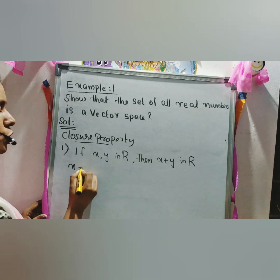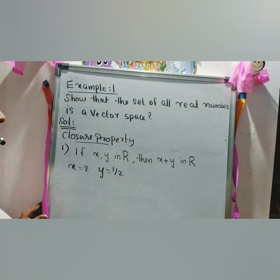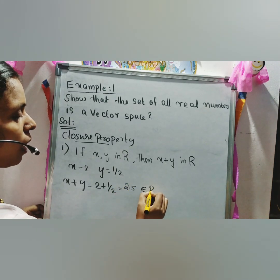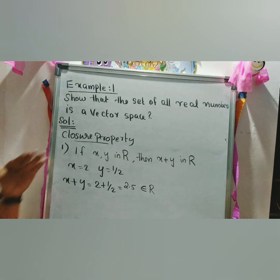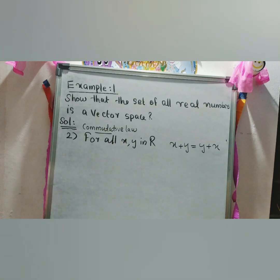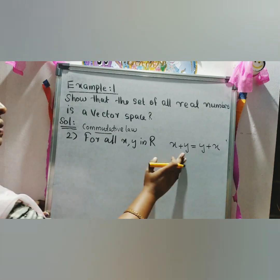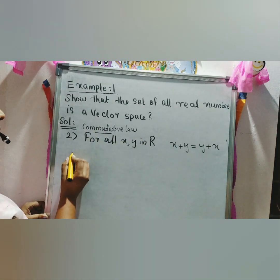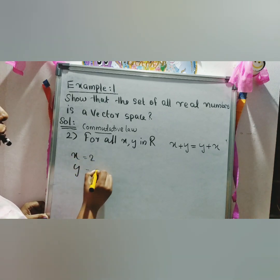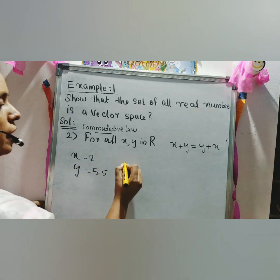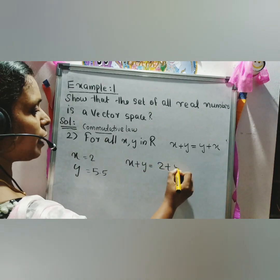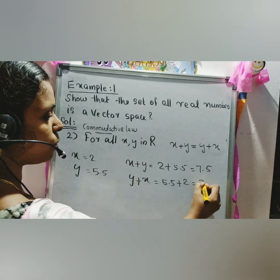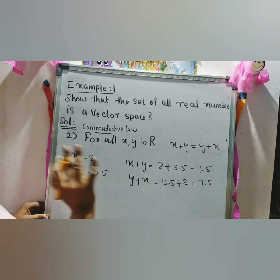For example, if x equals 2 and y equals 1/2, then x plus y equals 2 plus 0.5, which equals 2.5, which belongs to R. So R satisfies the closure property. For the second property — commutative law — for all x, y in R, x plus y equals y plus x. For example, x equals 2 and y equals 5.5: x plus y equals 7.5 and y plus x equals 7.5. So it satisfies the commutative property for every element in R.